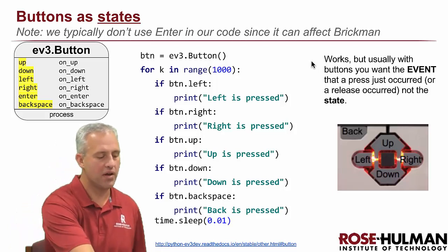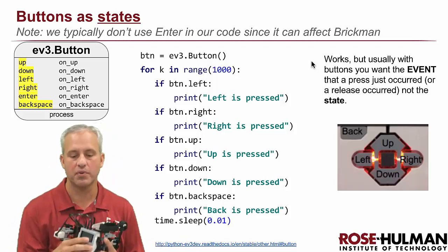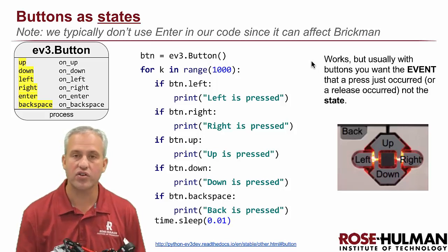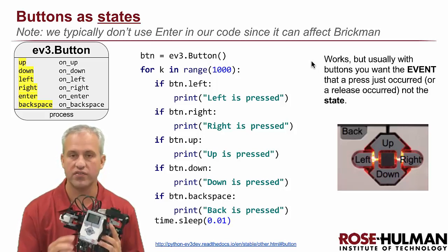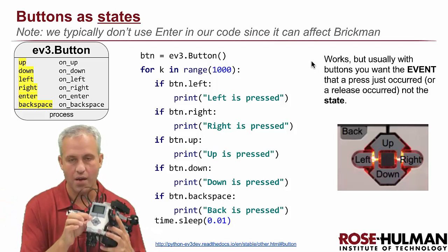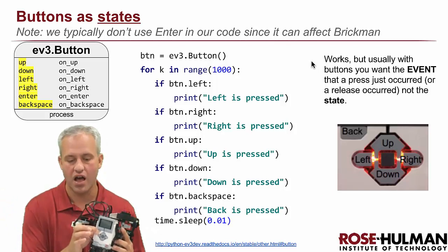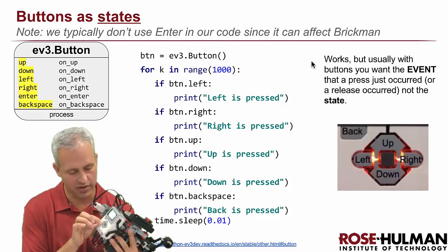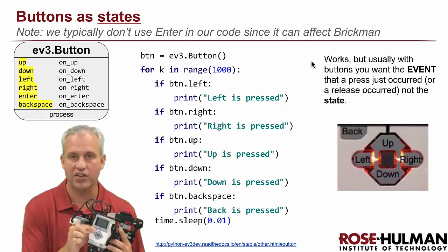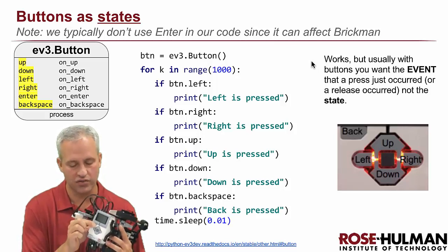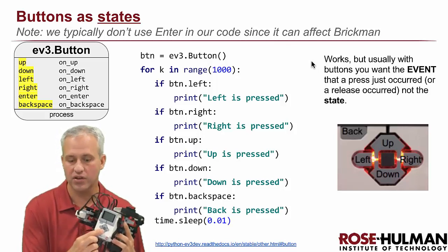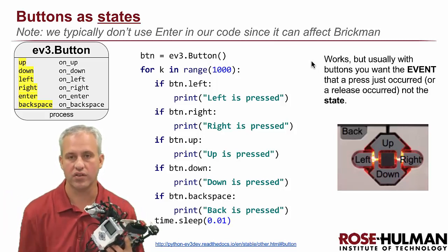The buttons on the front — up, down, left, right, enter, and backspace. This code shows how you can use them as states. Here's a loop that runs a thousand times. If you're not pressing anything, nothing's printed. If you start pressing something it'll print that — like pressing backspace would say 'backspace' a hundred times a second.